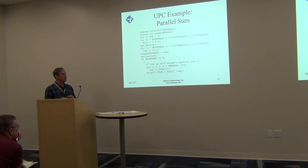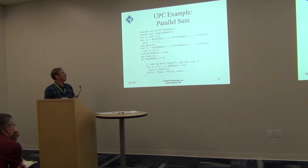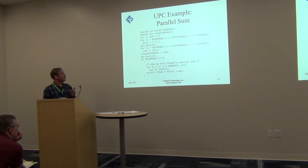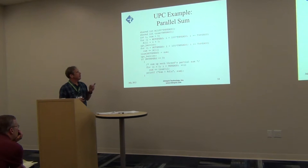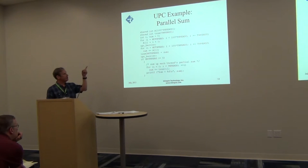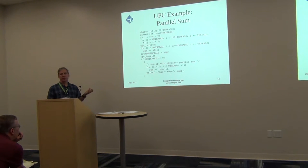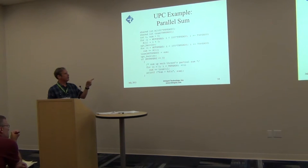Here's a simple example illustrating a couple of things in UPC. You'll see two shared declarations at the top. Array A has a multiplier of 100 times the number of threads, meaning there will be 100 elements per thread. As in the earlier diagram, element 0 goes to thread 0, element 1 to thread 1, and so on, wrapping around.